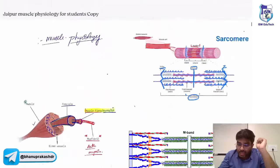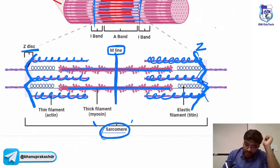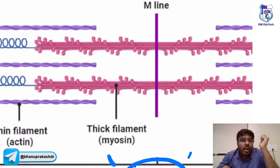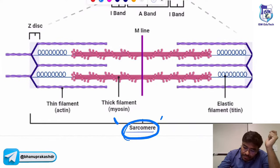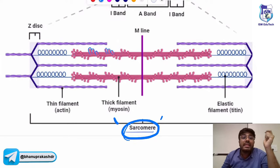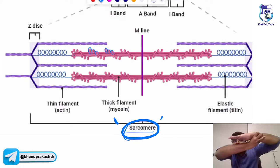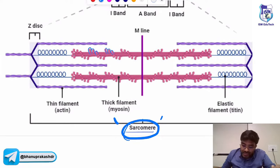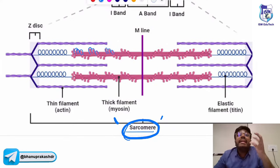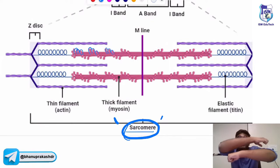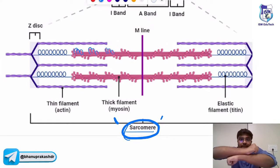Where is the ATP being broken down? Look at the thick filaments — zooming in on the myosin filament. Are you able to appreciate these heads? These are the myosin heads. The myosin head will go and bind with the actin and cause the sliding of the actin filament over the myosin filament. These myosin heads contain ATPase activity — they break the ATP, and by using this energy, they cause the sliding of the actin filament over the myosin filament, causing muscle contraction.